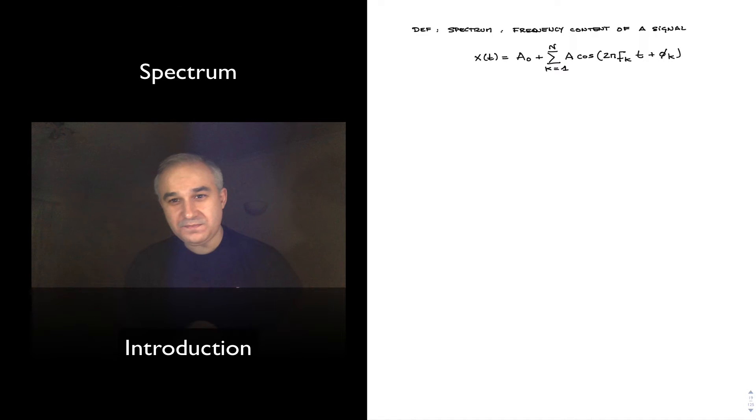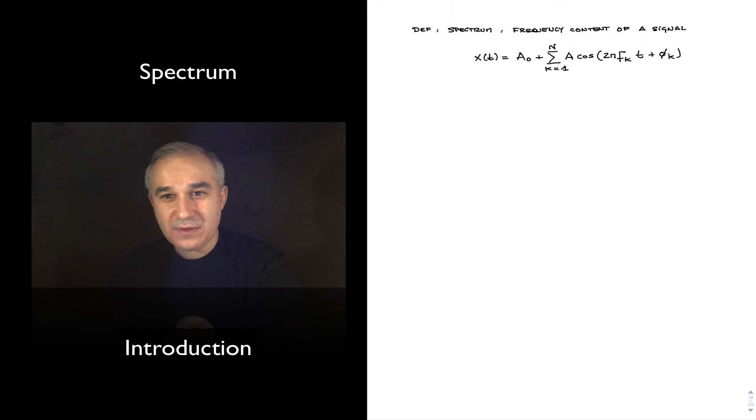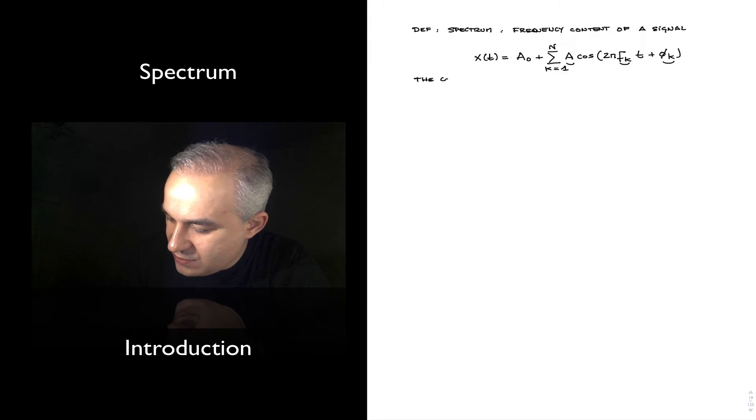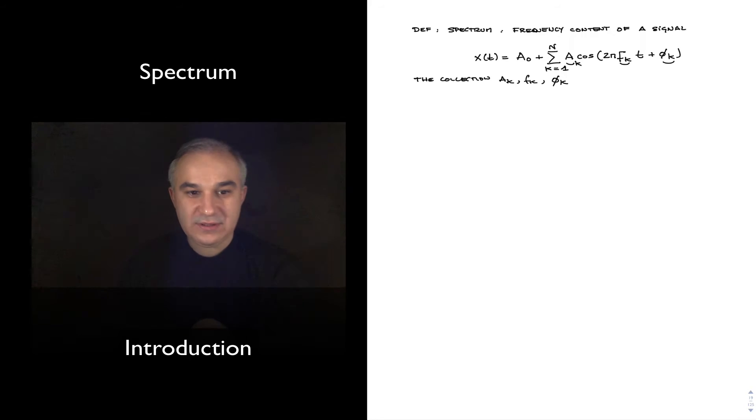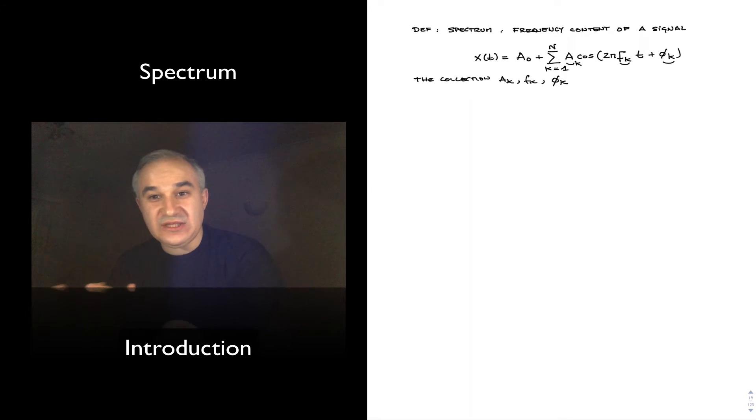Okay, so we have a signal, and we're decomposing it into a sum of sinusoids of different amplitudes, frequencies, and phases. In that case, the frequency content of a signal will be the collection of amplitudes, this is an ak, amplitudes, frequencies, and phases that enable us to express the signal in this form.